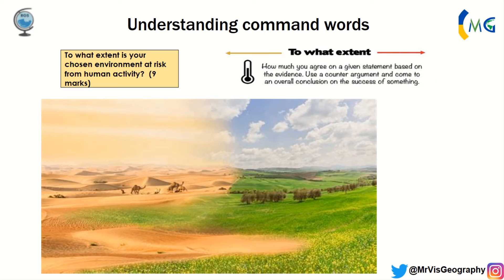Finally, 'to what extent' questions are highly likely to be nine-mark questions at A level, or 12 and 20-mark questions. 'To what extent' is basically asking how much you agree with the statement — you have to give an argument, a counter argument, and an overall opinion and conclusion. For example: to what extent is your chosen environment at risk from human activity? You can see a desert with camels suggesting overgrazing and desertification. Use a PEEL paragraph — point, evidence, analysis, counter argument, evaluation. For nine marks you need at least two PEEL paragraphs; for 12 marks at A level, two paragraphs with more than one point each; for 20 marks, three paragraphs. Never fully agree — always acknowledge opposing views.